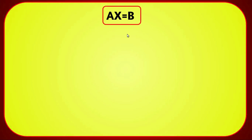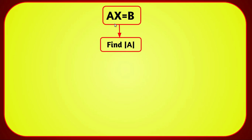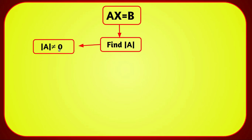For the system AX = B, first find the determinant of A. There are two cases: either the determinant of A is not equal to 0, or it equals 0. If the determinant of A is not equal to 0, then A is non-singular and the inverse of A exists.